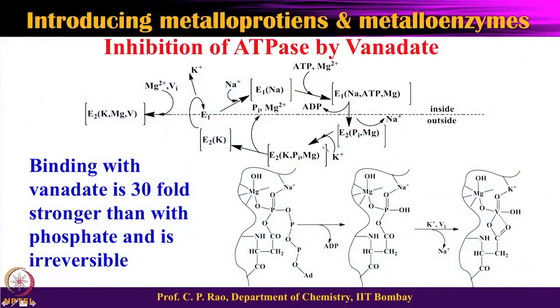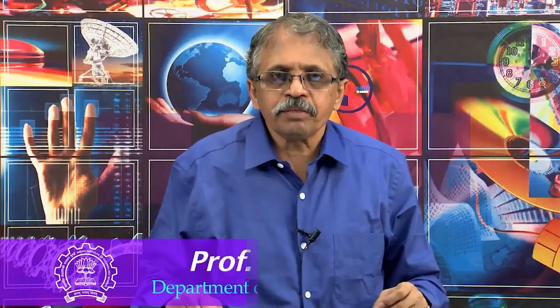In summary, this class covered vanadium oxidation states +5, +4, and +3 in biological systems; the ease of V5+→V4+ reduction, possibility of V4+→V3+, and unfavorability of V3+→V2+; vanadate's role as an irreversible inhibitor of the ATPase cycle in the potassium-dependent half. In the next class we will continue with the vanadium-based enzyme called vanadium haloperoxidase. Thank you.